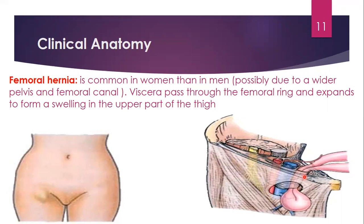Femoral hernia occurs more in women than men, possibly because of the wider pelvis of females. It can be seen in weight lifters and people who do manual labor carrying heavy weights. A waistband can be used to help prevent such hernia.